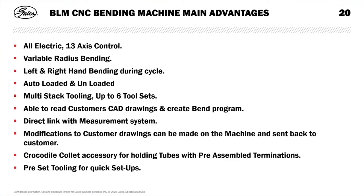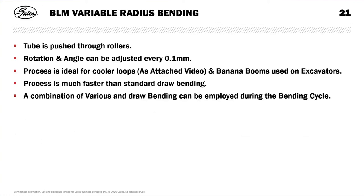The machines are also directly linked with the measuring system. If it's a new job, we set up the part, bend one, put it onto the measurement system, measure the part, see the errors in the coordinates, and it works out a correction program which is sent back to the bending machine so the next one produced is good. Because the machine is all-electric — including all the tooling — this ensures that next time you come to make that job, six months later, the first one off is going to be correct. We can also do variable radius bending and normal draw bending in the same cycle because of the two heads.